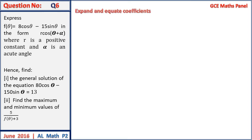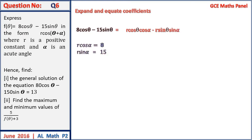The first thing we have to do is expand and equate the coefficients. We have 8cosθ - 15sinθ equal to L·cosθ·cosα - L·sinθ·sinα. Looking at the identities, we have L·cosα = 8 and L·sinα = 15. This gives us tan(α) equal to 15 over 8.